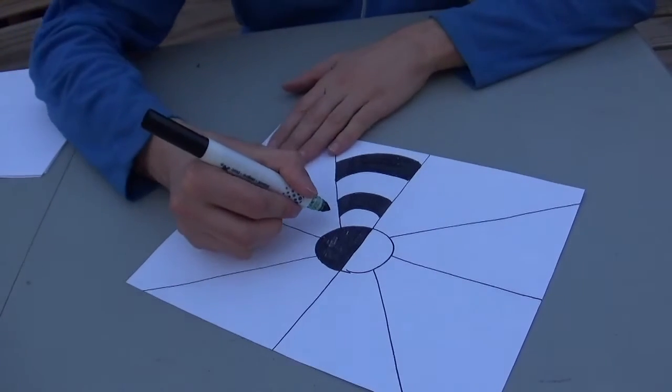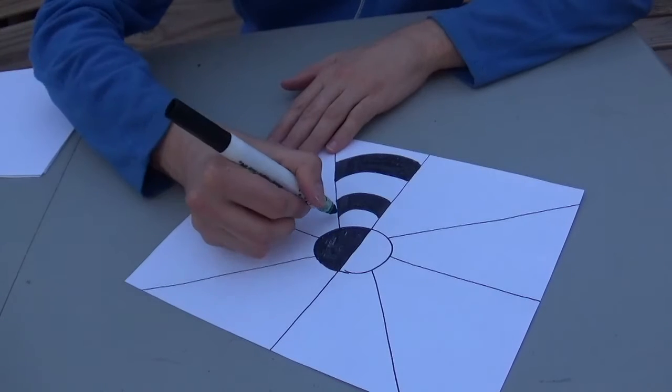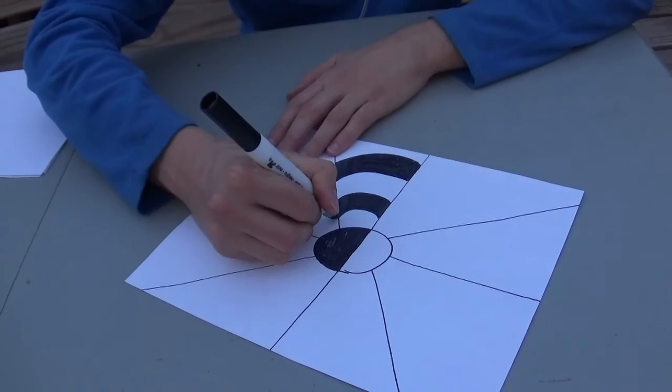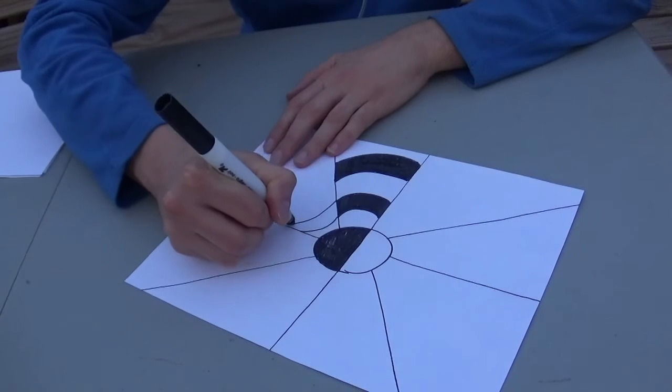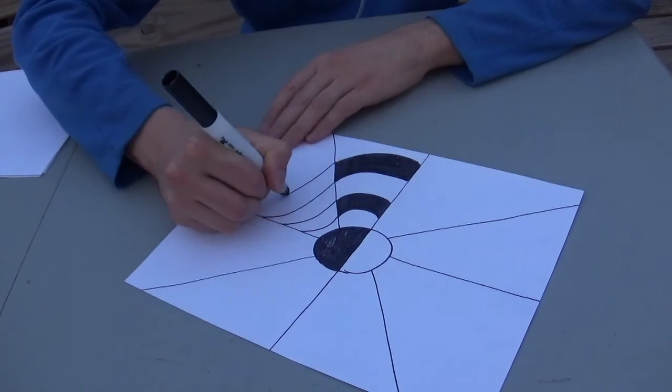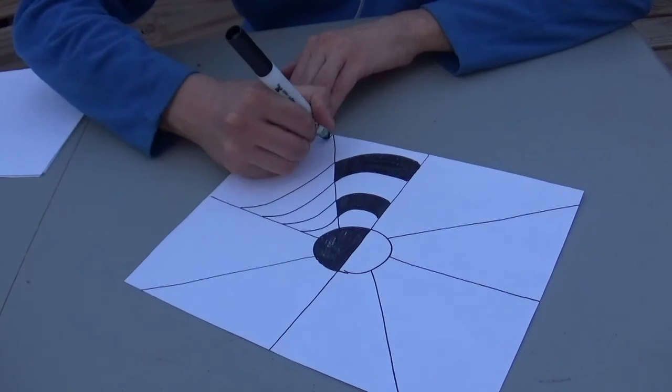Now I'm going to move over to this next section and draw an arc going in the opposite direction, connecting those lines to each other. I'm going to imagine there's an arc there.